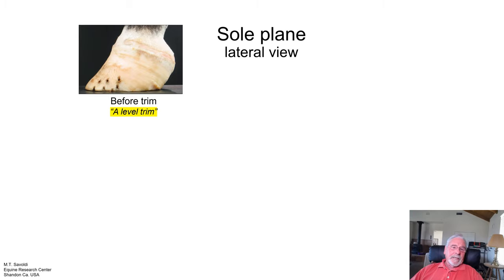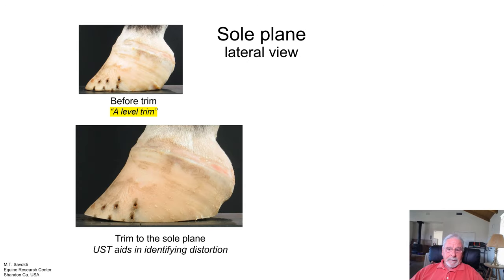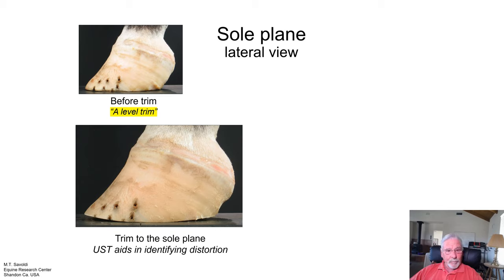Before trim, let's look at a lateral view — lateral simply means furthest away from the body. If we incorporate the principles behind uniform sole thickness, we have now identified distortion to the sole plane. We need to learn how to work this distortion out and basically how to prevent it from occurring.